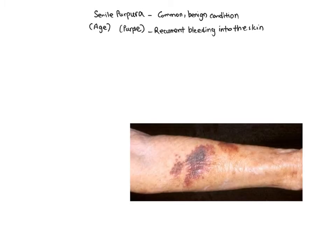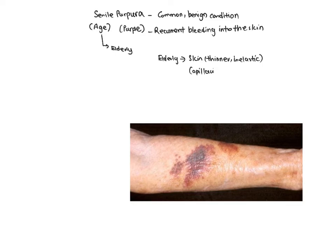Senile purpura is more common in elderly people, and I'll explain why that is so. As we age, the skin tends to become thinner and relatively more inelastic. The capillaries supplying the skin also become more fragile. So in essence, the capillaries are more prone to damage with minor trauma, which will result in bleeding into the underlying tissues.